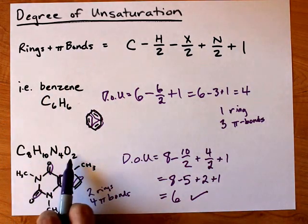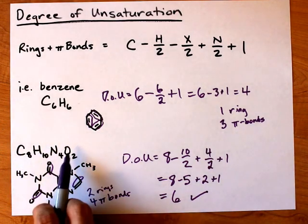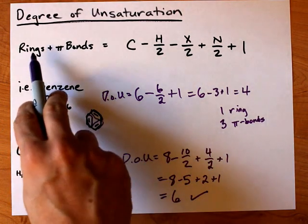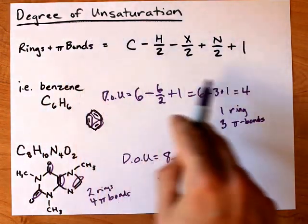If you have the molecular formula, you can get information about how many rings and/or pi bonds there are with degree of unsaturation.